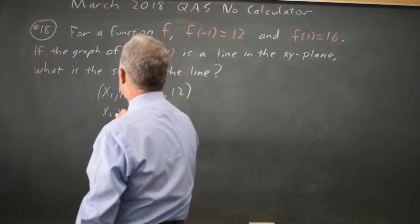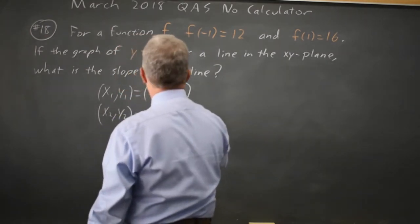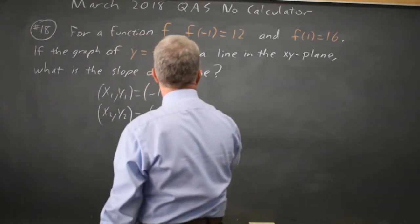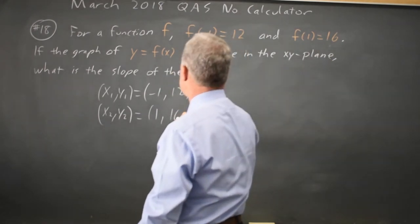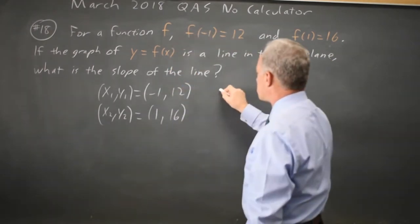And x₂, y₂, we have the point x equals 1, when f(x), which is y, is 16. And we know our slope formula.